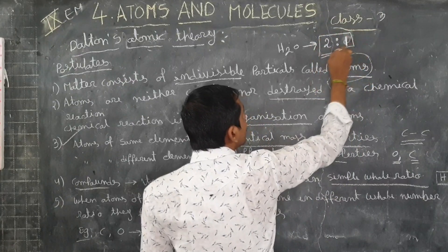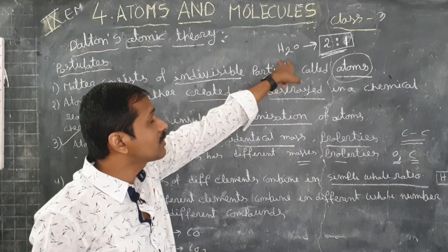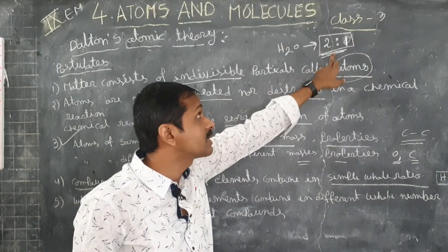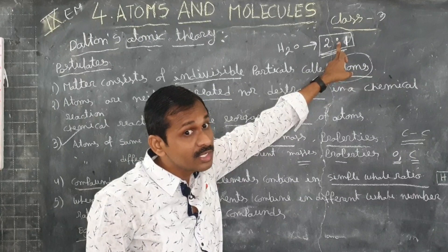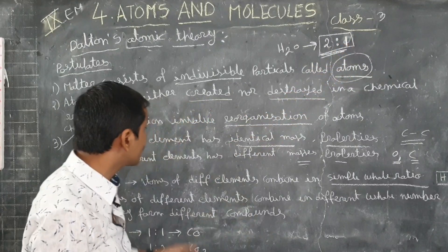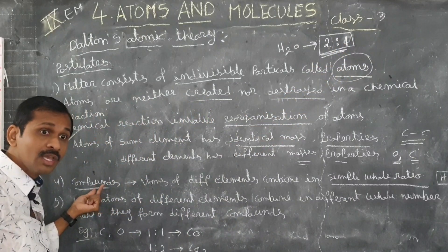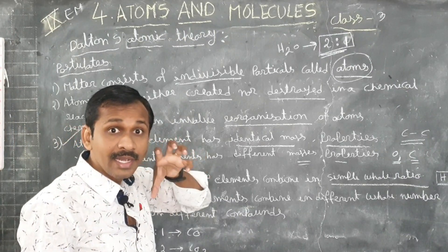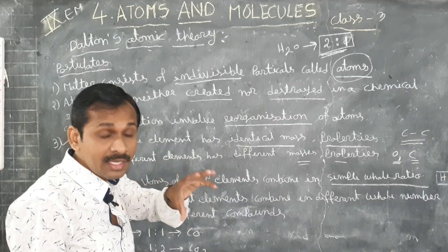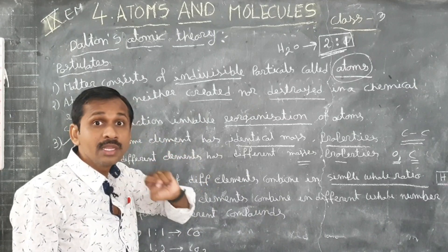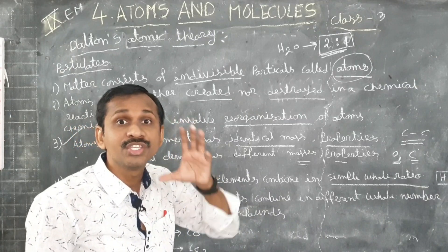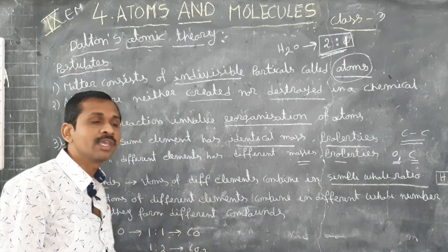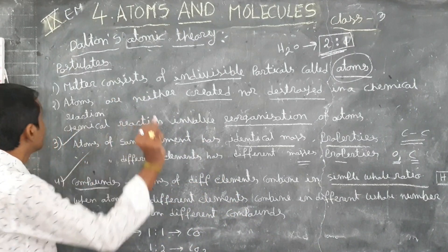In a 2:1 ratio, atoms of hydrogen and oxygen combine, and compounds are formed. The compounds are formed when atoms of different elements combine with each other in a whole number ratio. This is the fourth point explained by Dalton.